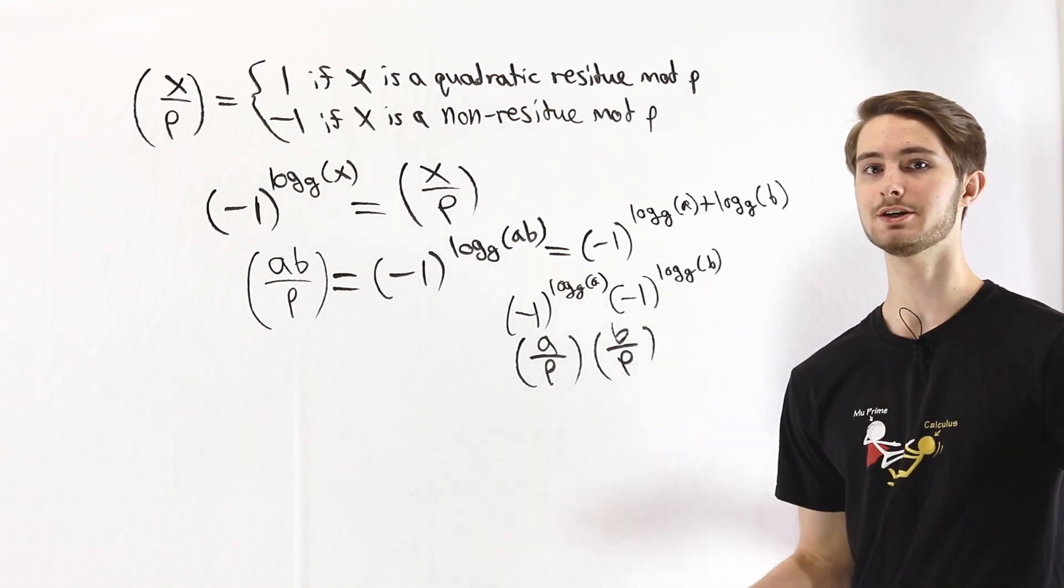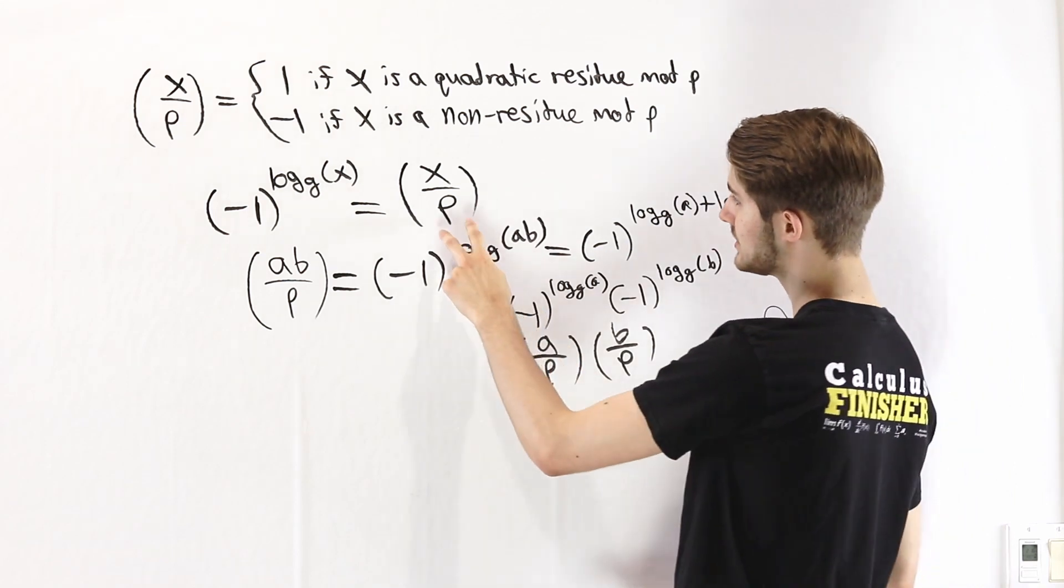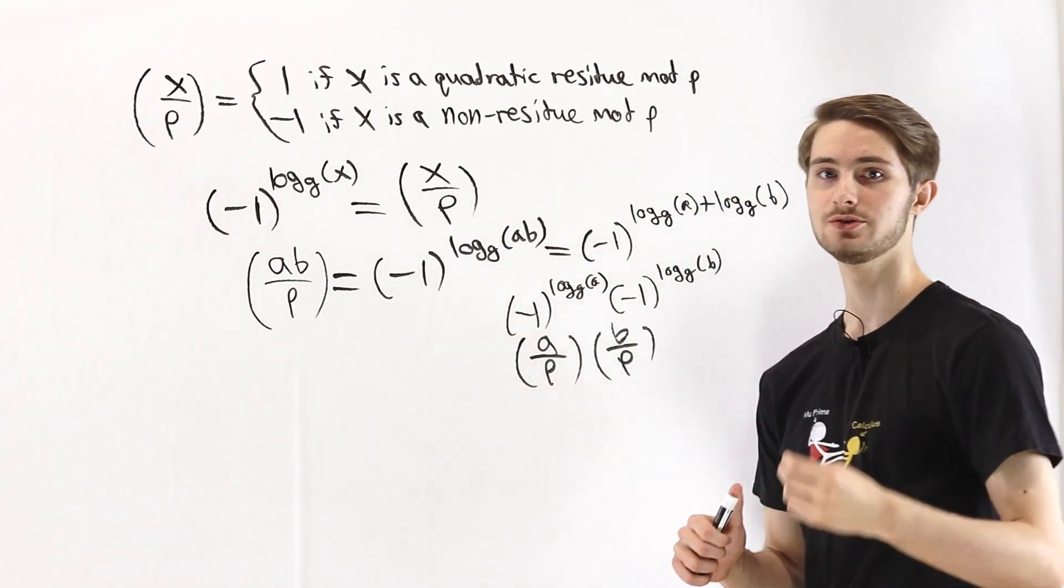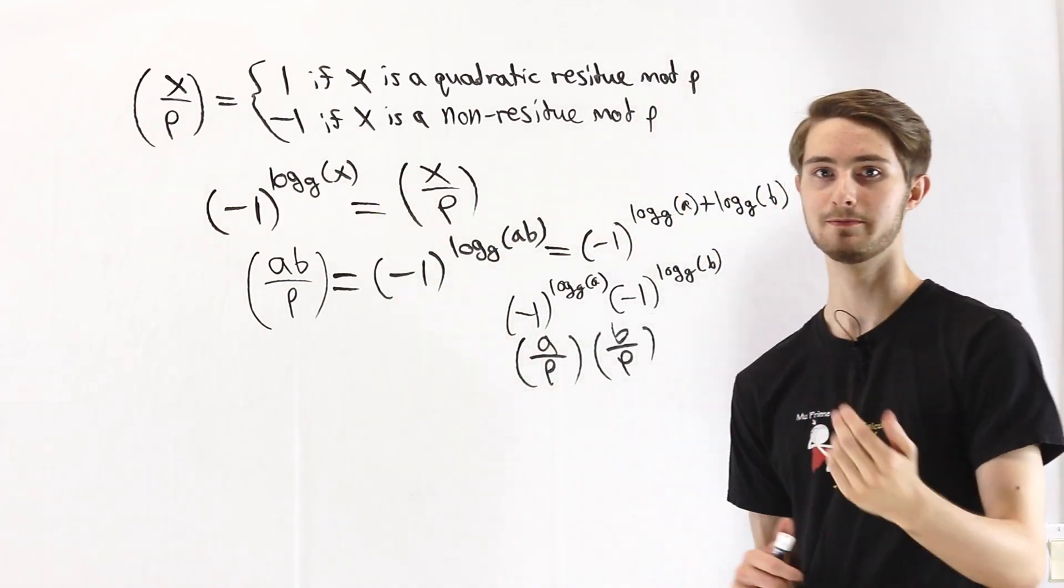And this is true for any numbers a and b. The way that we did that was by realizing that the Legendre symbol is related to (-1) to the power of the index of that number mod p.